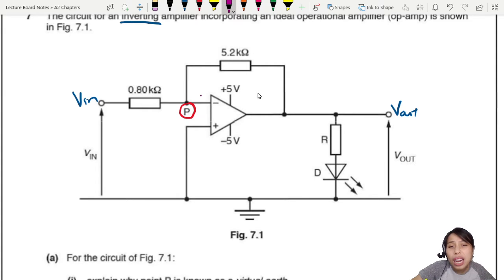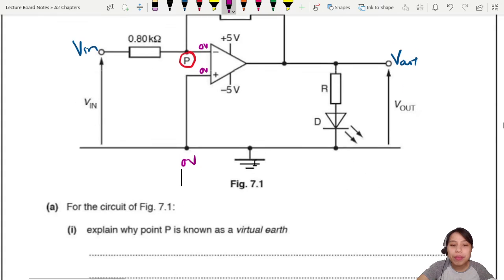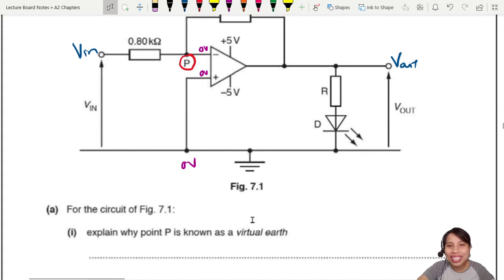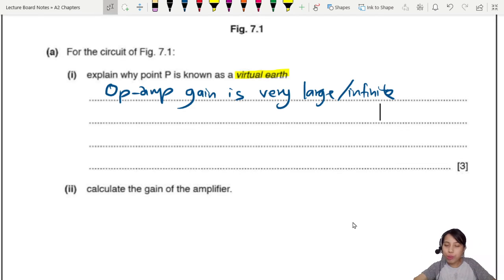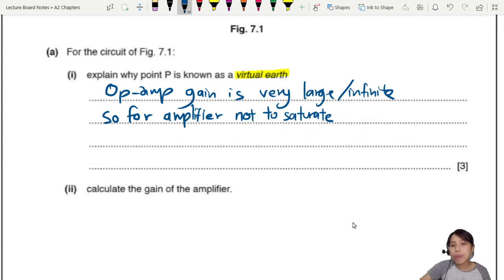This is what we call virtual ground, where you have to be at zero volts. Why? Because the other pin is at zero volt ground, so you have to try to match that. The feedback loop will make sure both are roughly at zero volts. The first part asks to explain why point P is known as virtual earth. You need to mention that the op-amp gain is very large, infinity, very big.